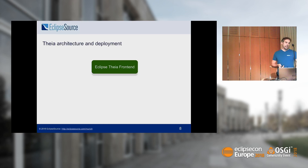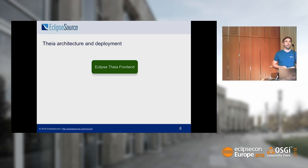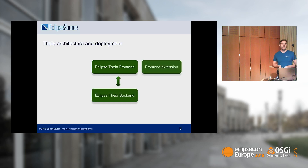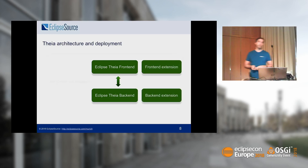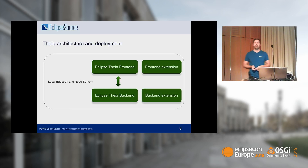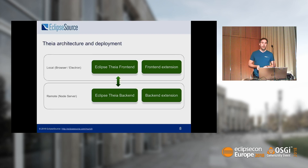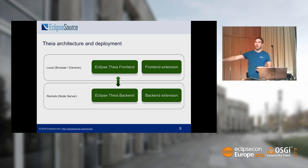Quick overview of the architecture: Theia consists of a frontend part and a backend part. You can extend the frontend with UI components and the backend with services. You can either deploy both together locally — that's the desktop use case with Electron and a Node server — or you can deploy those two parts independently. That's what we have here: the server part is running on the Raspberry Pi.